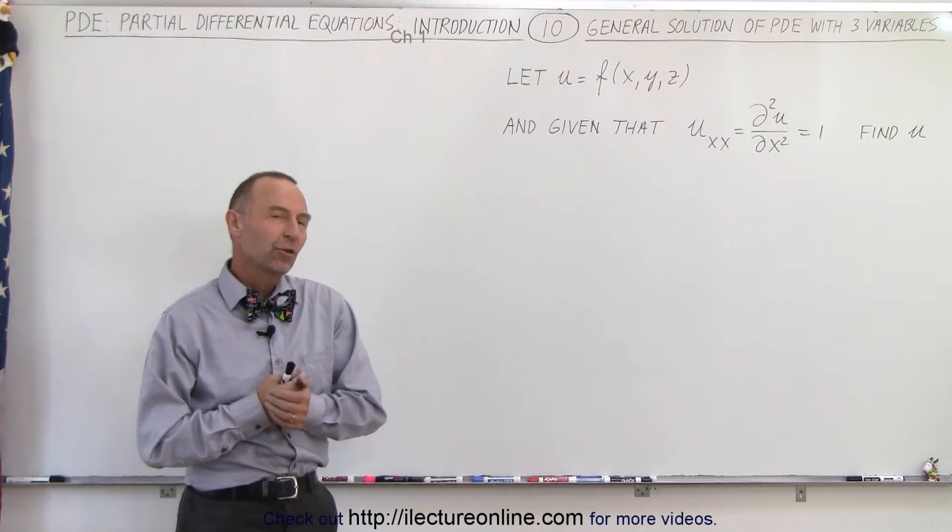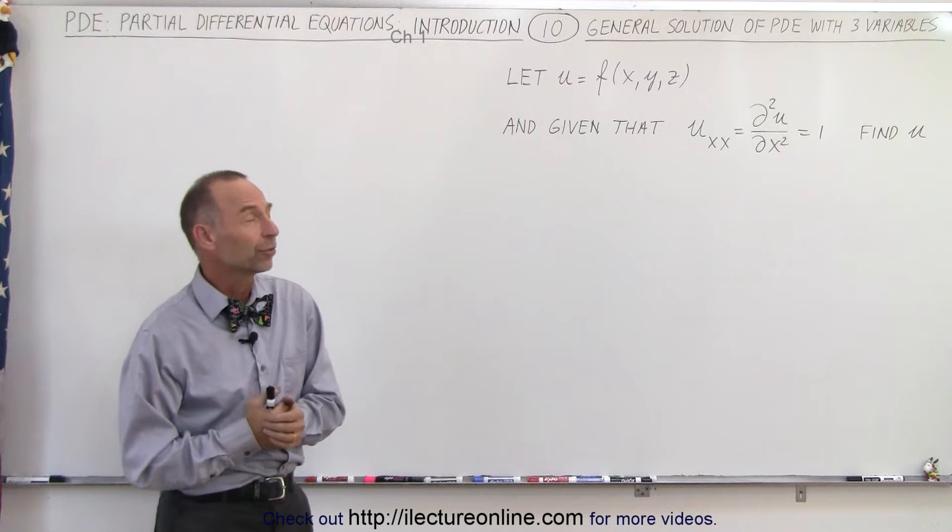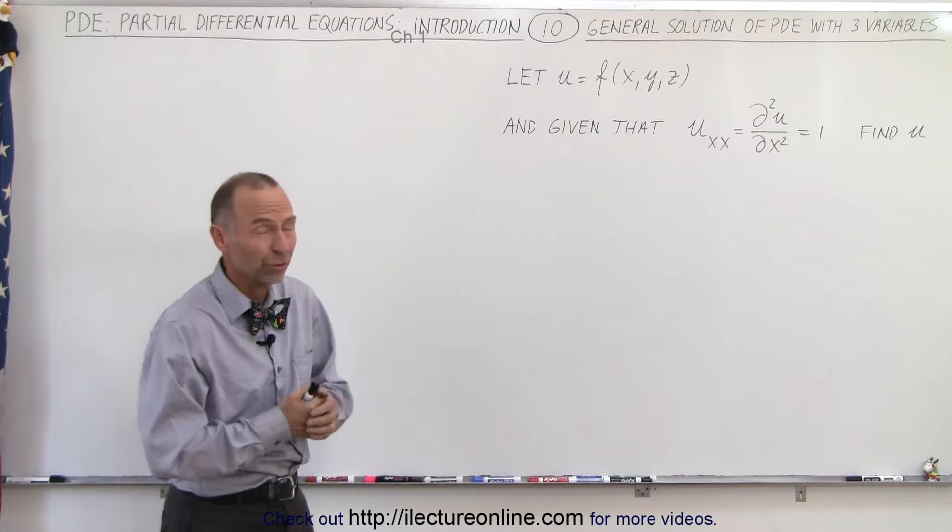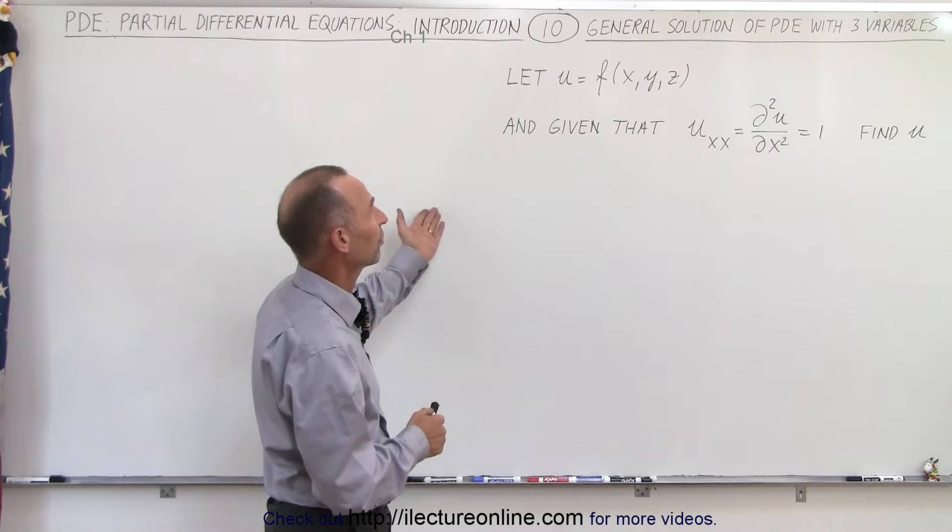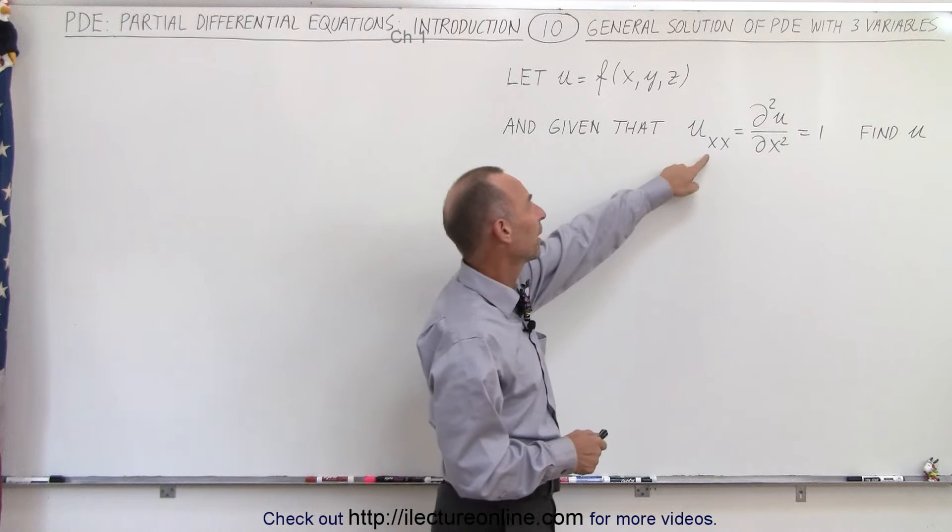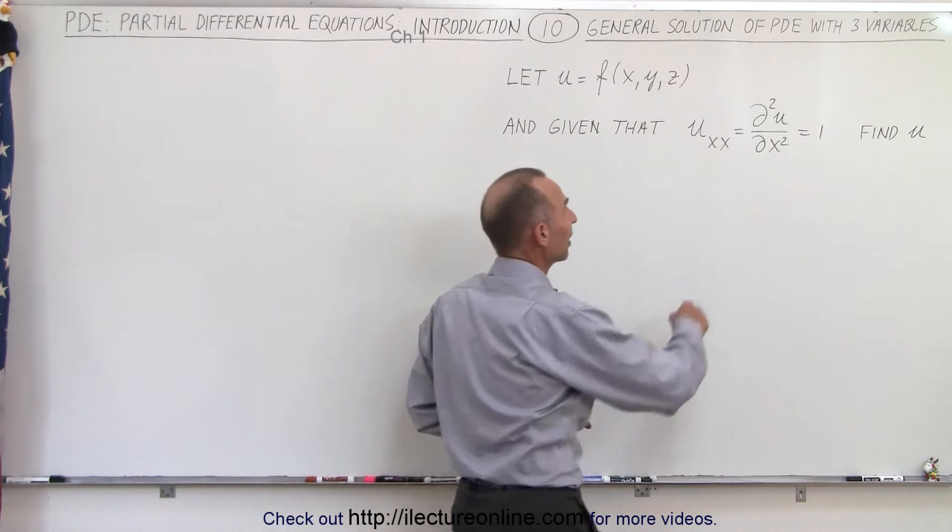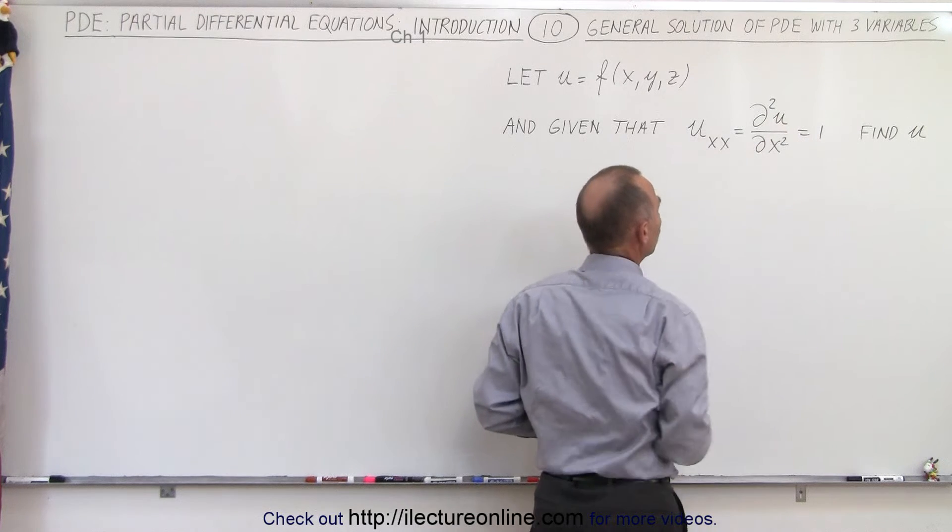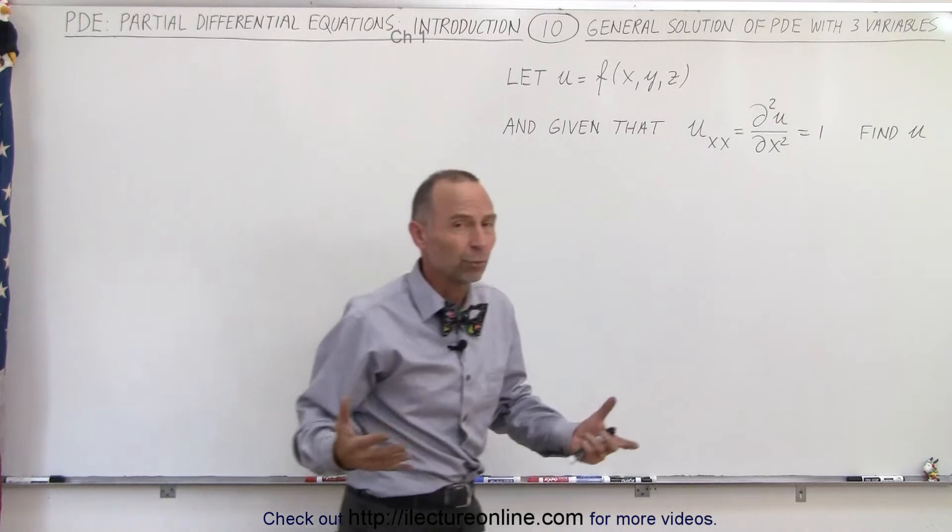Welcome to our lecture online. So far we've been looking at partial differential equations with just two variables. What happens when we have three variables, x, y, and z, so three independent variables, and we're given a partial differential equation with respect to one of the three variables, in this case x. So here we have the second partial differential equation with respect to x of the function u, and we set it equal to one, and we're supposed to find the function.